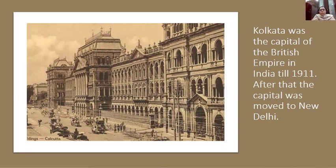Kolkata was the capital of the British Empire in India till 1911. After that, the capital was moved to New Delhi. You have already learned this in chapter number 14 on Delhi — in the beginning, the capital of the British Empire was Kolkata, but later they shifted their capital from Kolkata to New Delhi.